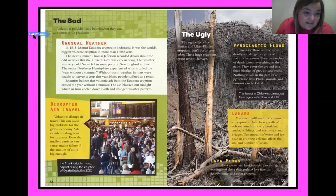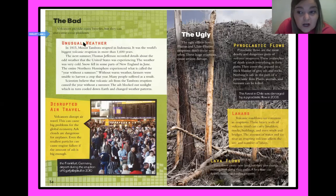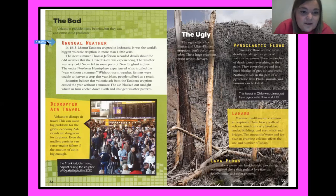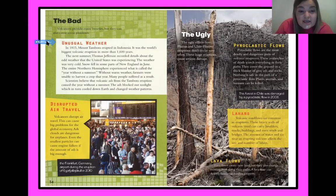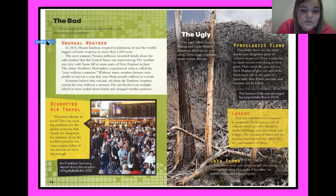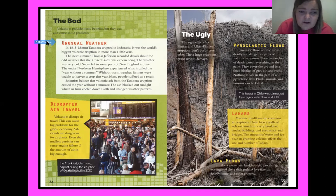Volcanoes provide many benefits, but they can also cause problems. Unusual weather: in 1815, Mount Tambora erupted in Indonesia — the world's biggest volcanic eruption in more than 1,600 years. The next summer, Thomas Jefferson recorded details about the odd weather in the United States. The weather was very cold; snow fell in some parts of New England in June.